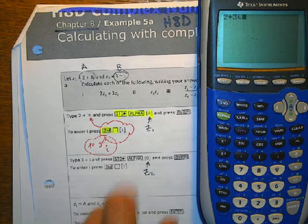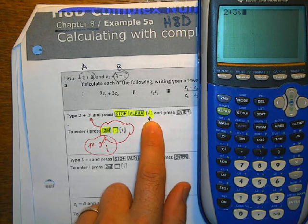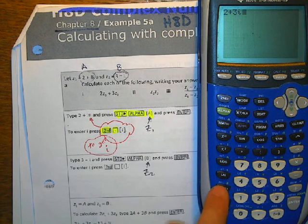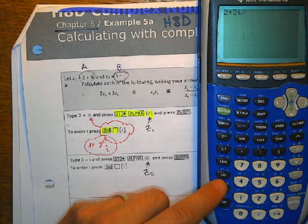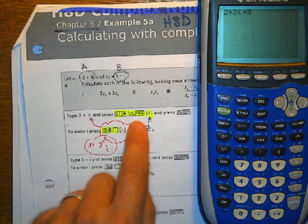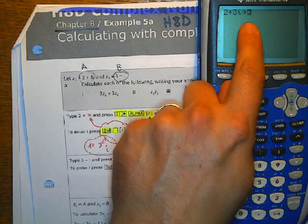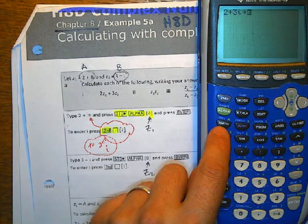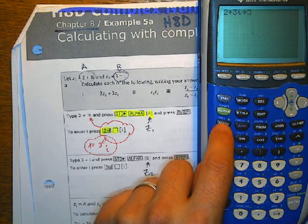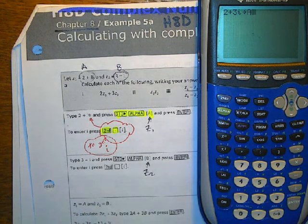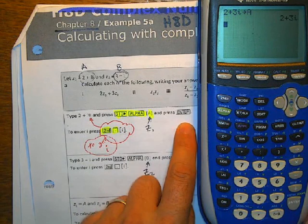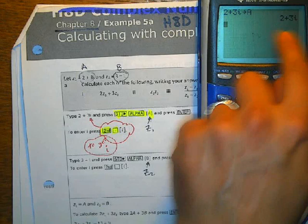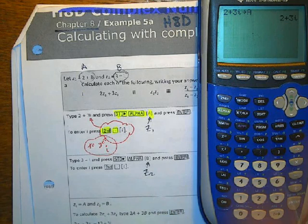And now I need to store this as the variable A. So in order to do that, I'm going to hit the STO, that's just above the ON button right here. I'm going to hit the STO, and then I'm going to hit alpha. And now it's saying what letter are we going to put this in? And we want to put the letter A. So under math in green it says A. I'm going to push the math button and now it says A. And now I'm going to press enter. And so now whenever I do value of A, this means the value of A.